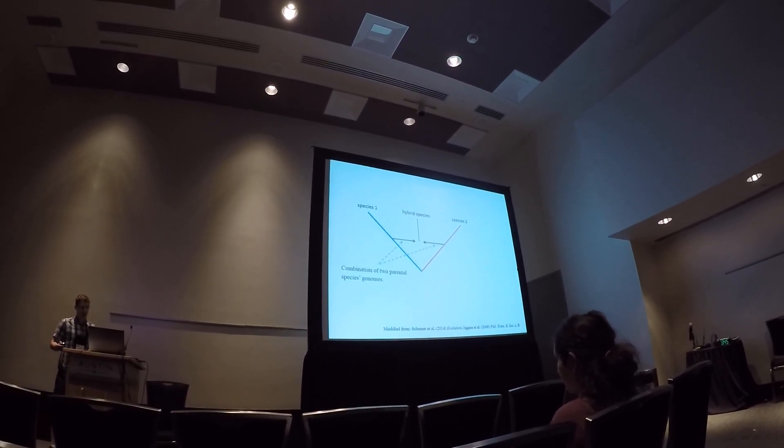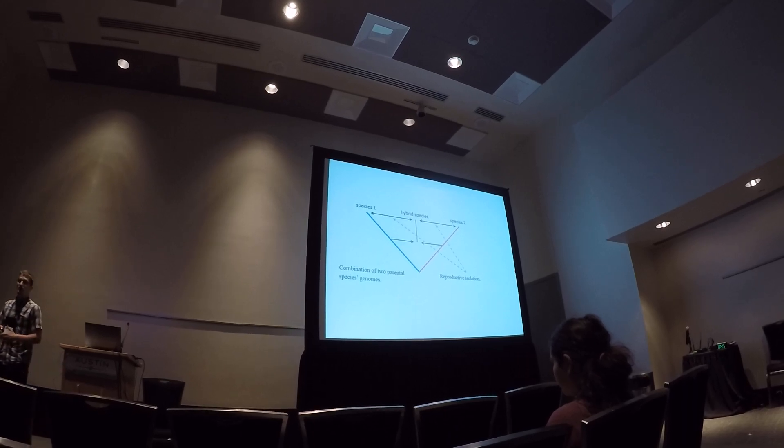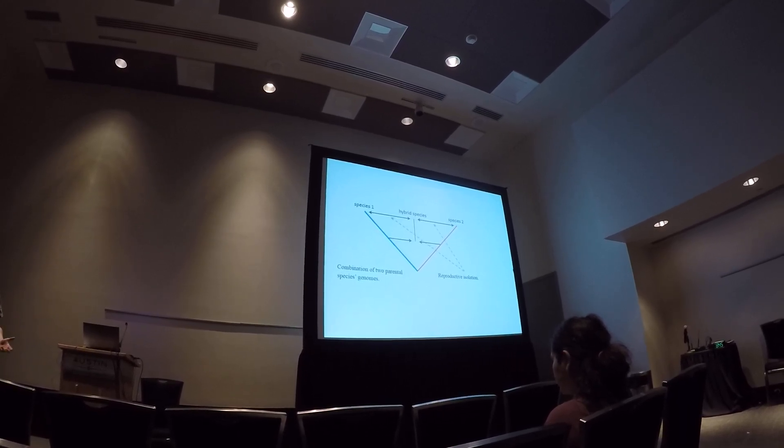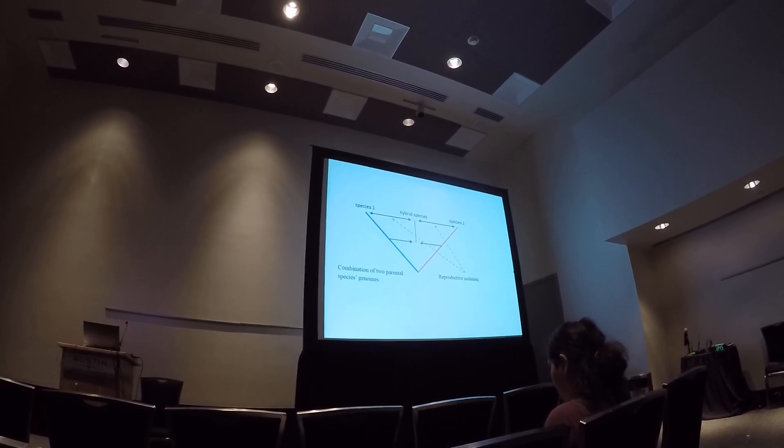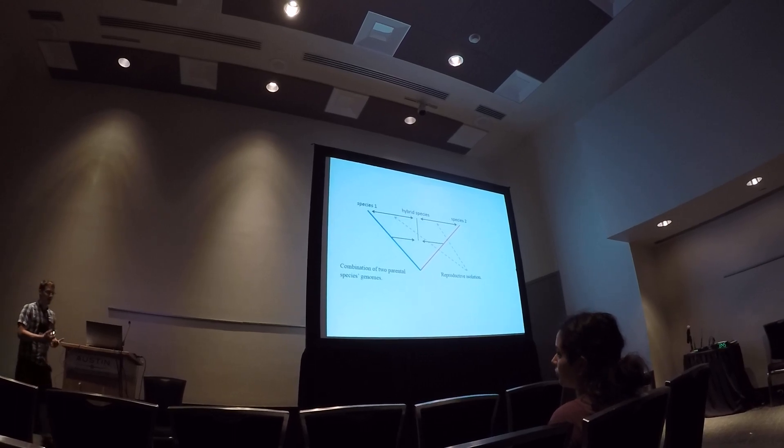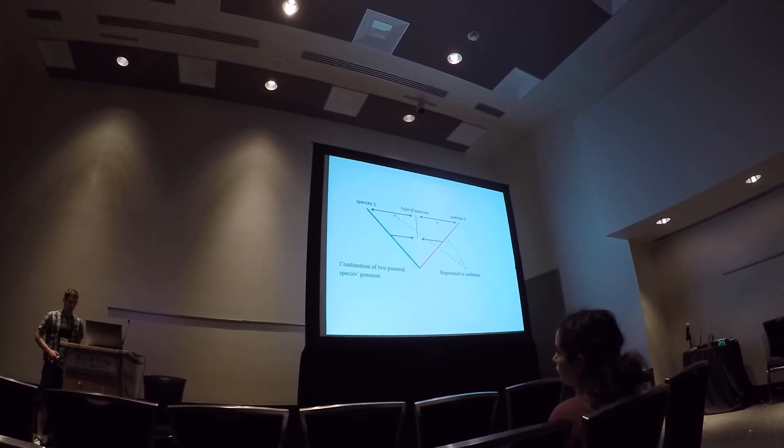And the important component of hybrid speciation is that this hybridization event, or the mixing of these two genomes, results in reproductive isolation between the hybrid species and the parental species. And this is kind of the hardest part of identifying hybrid speciation is describing the hybridization event to the generation of reproductive isolation.